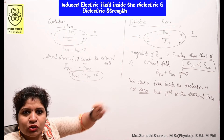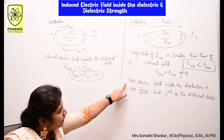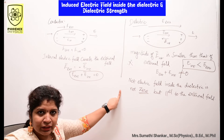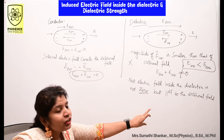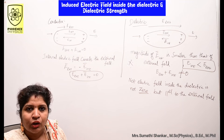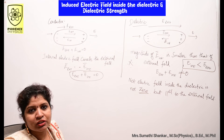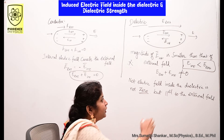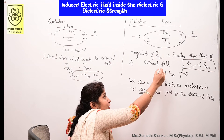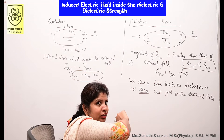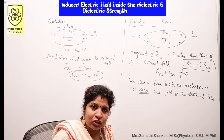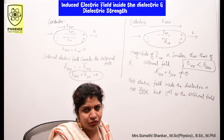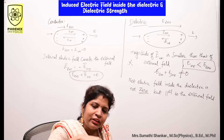So what is the conclusion? The net electric field inside the dielectric is not zero, but it is parallel to the external field. Since E external is greater than E internal, the net field is along the direction of the external electric field.